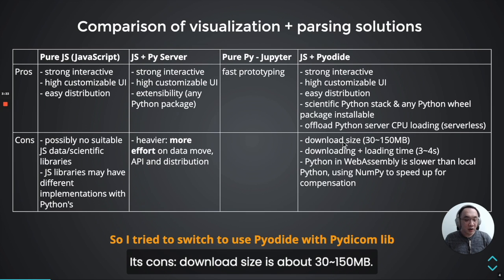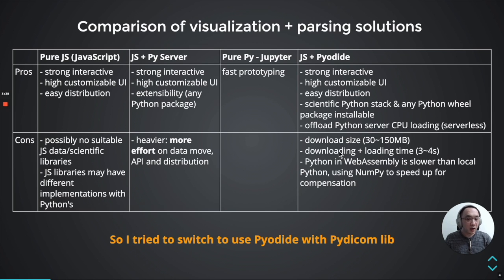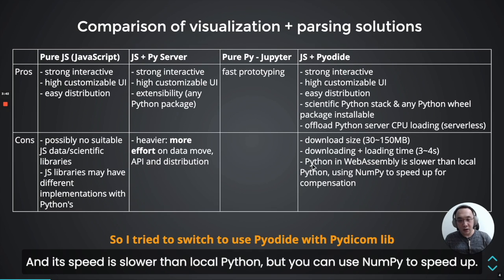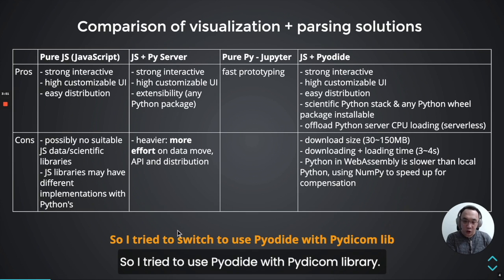The downside is the download size is about 30 to 150 megabytes, and downloading plus loading time is 3 to 4 seconds. Execution speed is slower than local Python, but you can use runpy to speed up. So I tried to use PyDai with a pydicom library.